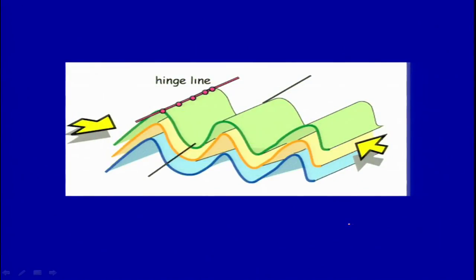Now, coming to the hinge line: if you connect a line along the points of maximum curvature, that gives you the hinge line. If you connect across it, that is your axial plane. So here you have a syncline, and there is an anticline.